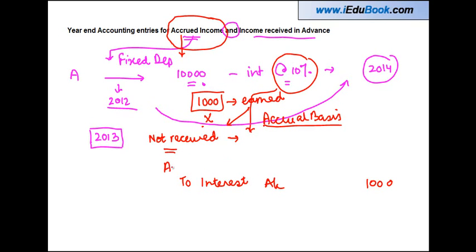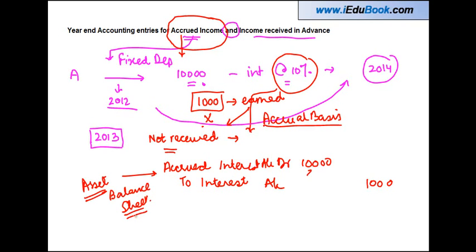Now because this interest is receivable from the bank or whosoever, we also debit an account called accrued interest account by same amount. This account is basically an asset account, meaning this is going to be reflected in the balance sheet.